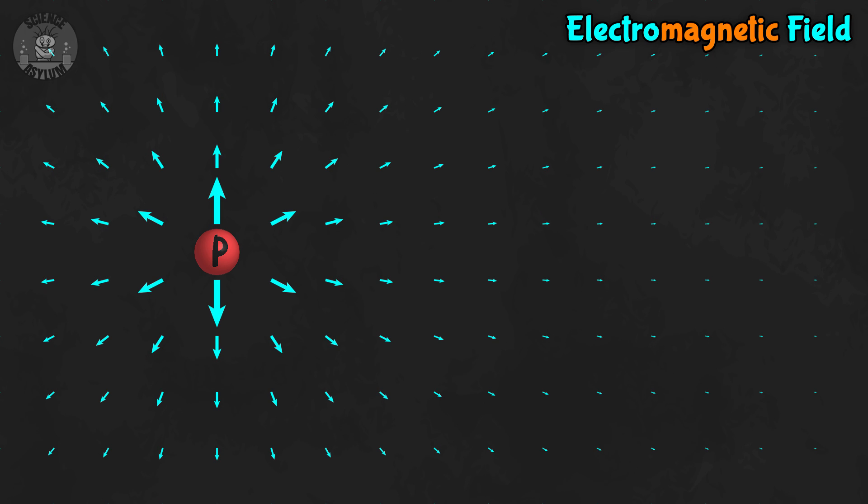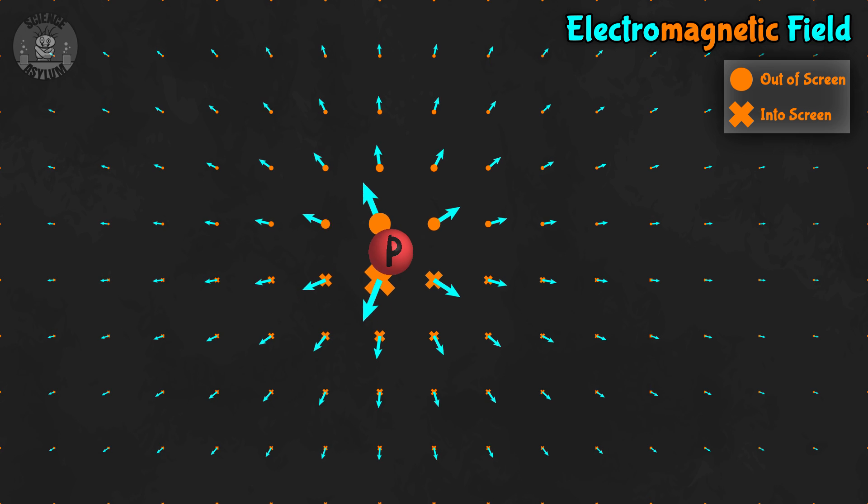This proton has a positive electric charge. If it's sitting still, then only the electric field is affected. But if it moves, it can also affect the magnetic field.